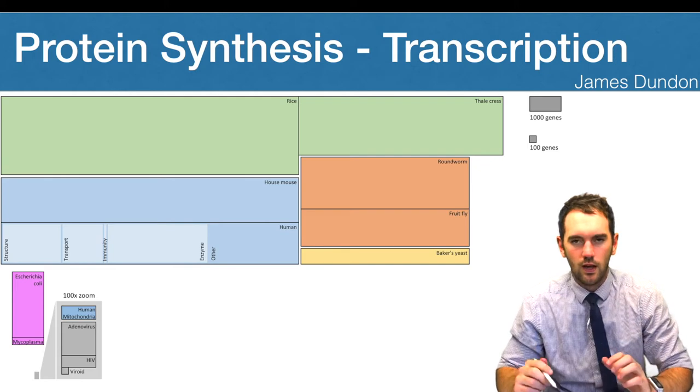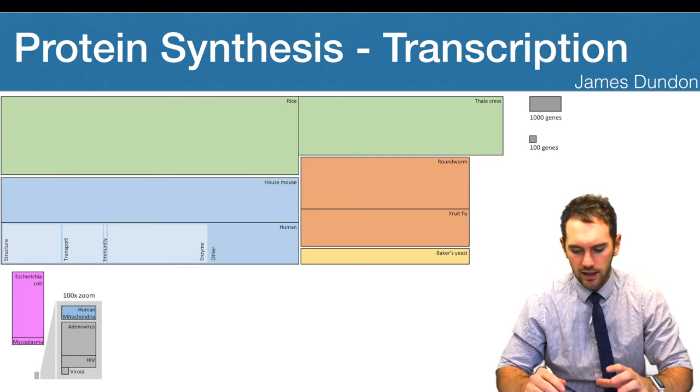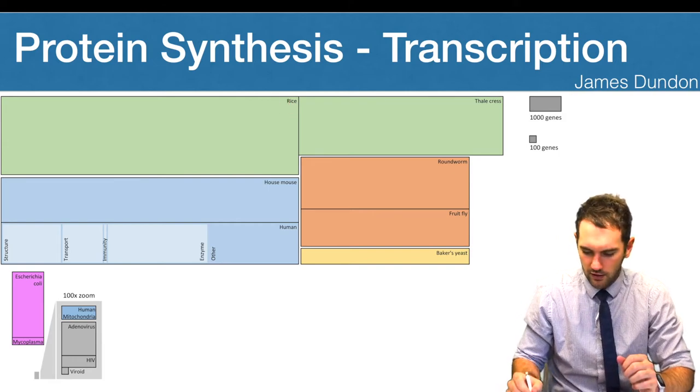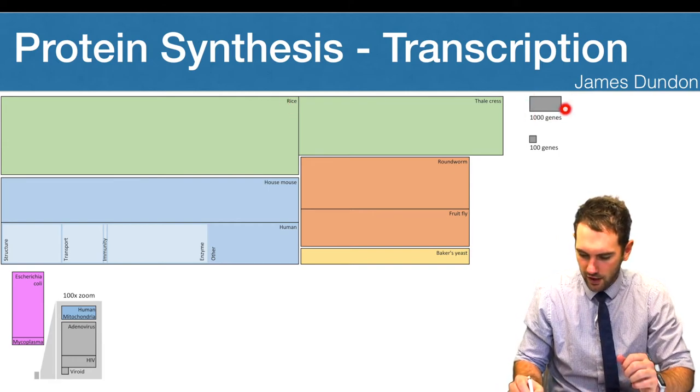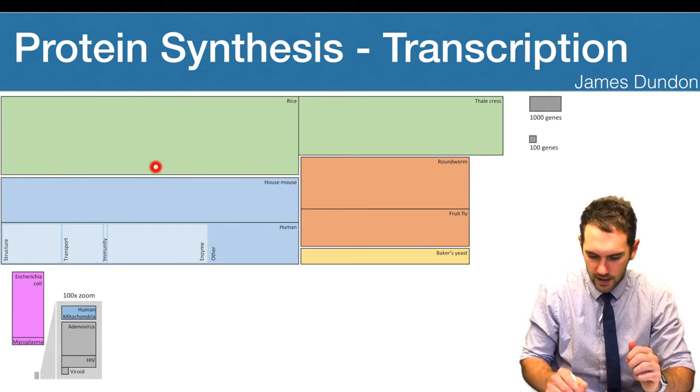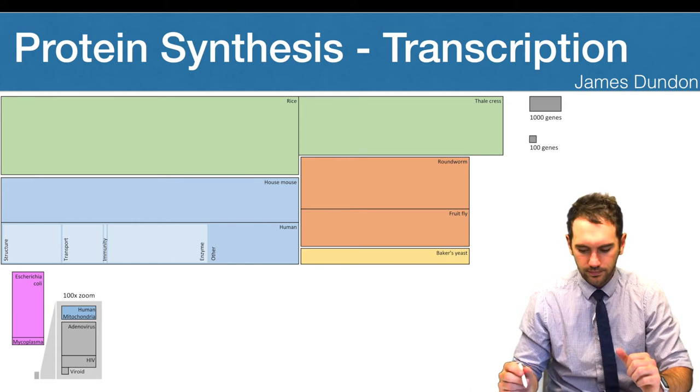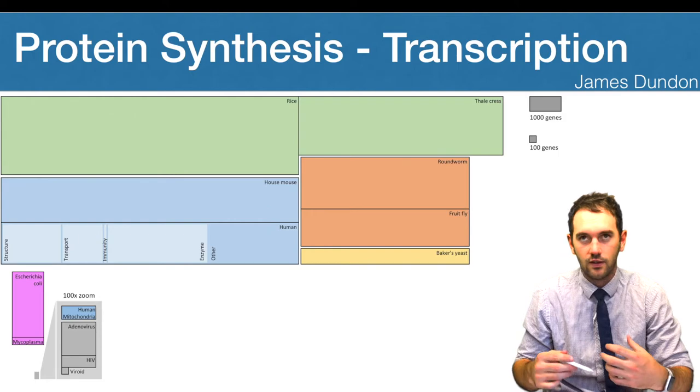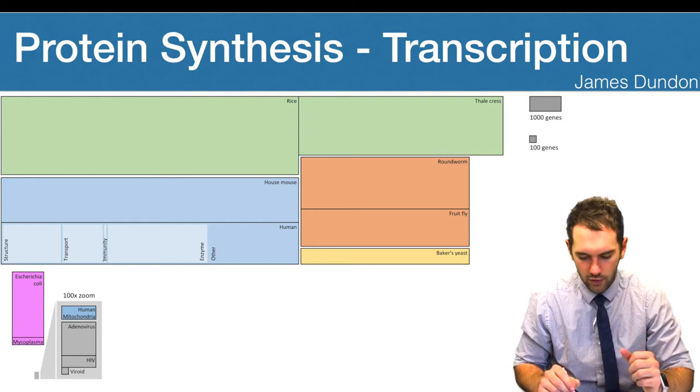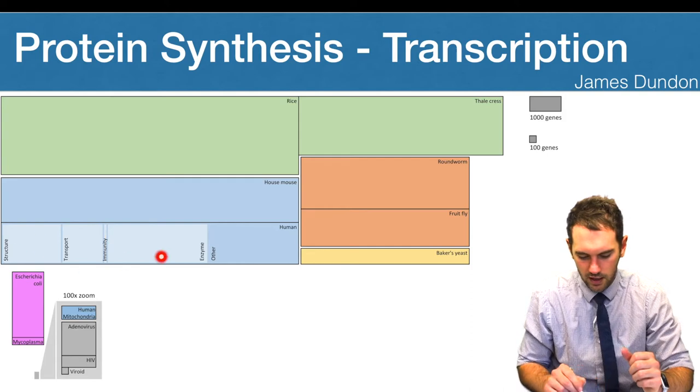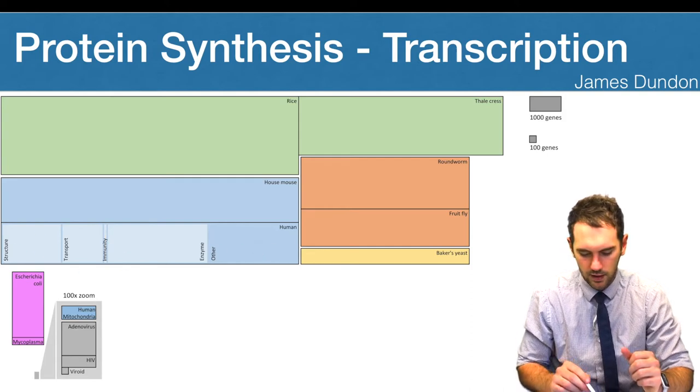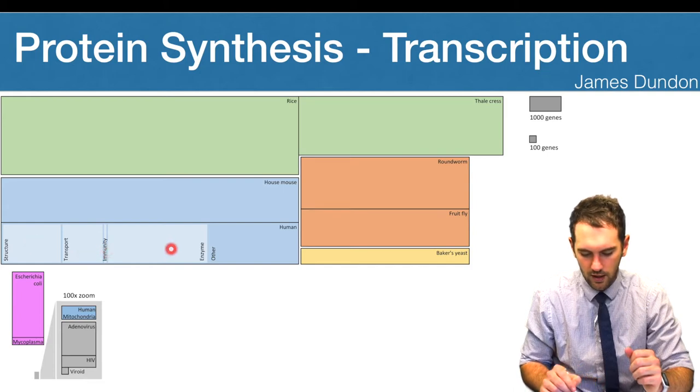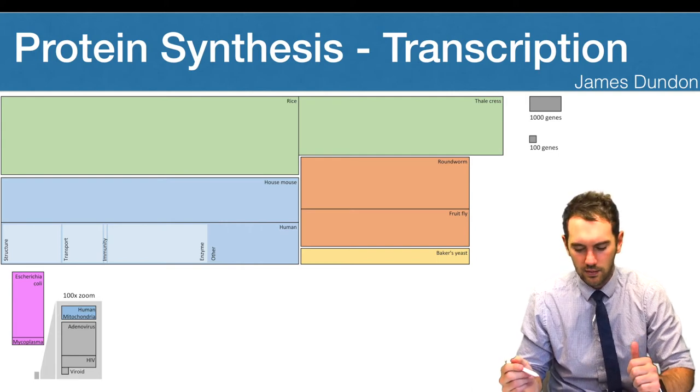So here in this picture, it's quite a cool one, we're basically looking at the number of genes in the genome for different species. So for example, we've got rice and you can see that this would represent a thousand genes. So how many times we'd fit that in that area there, that's how many genes it would have. You can see that the rice actually has more genes than a house mouse. And pretty much the house mouse has a very similar number of genes to a human. And then you can see that in this case, we've broken those down into structure, transport, immunity, enzymes and other.